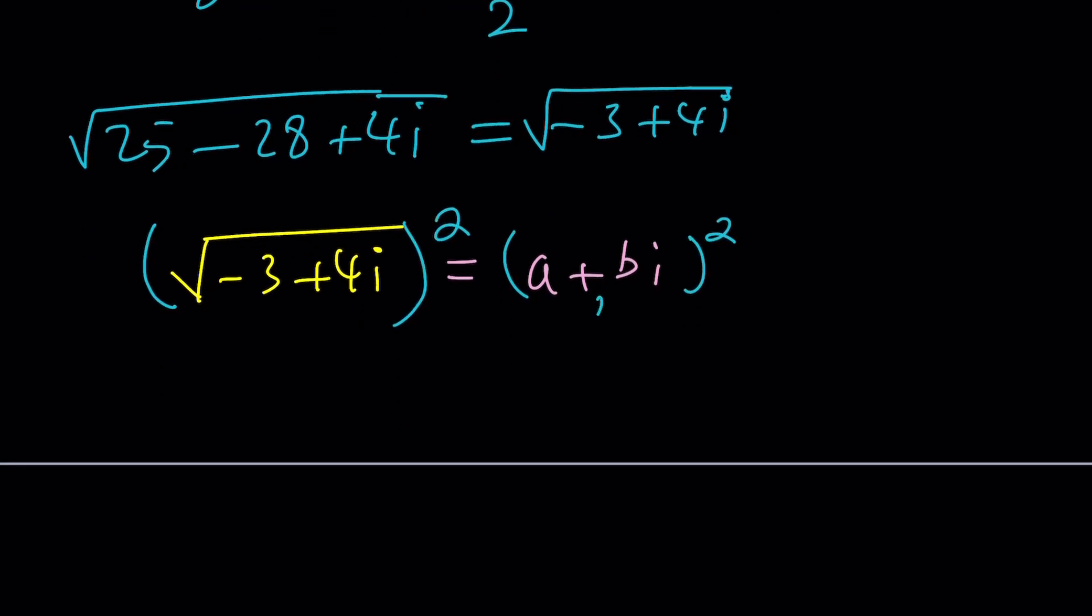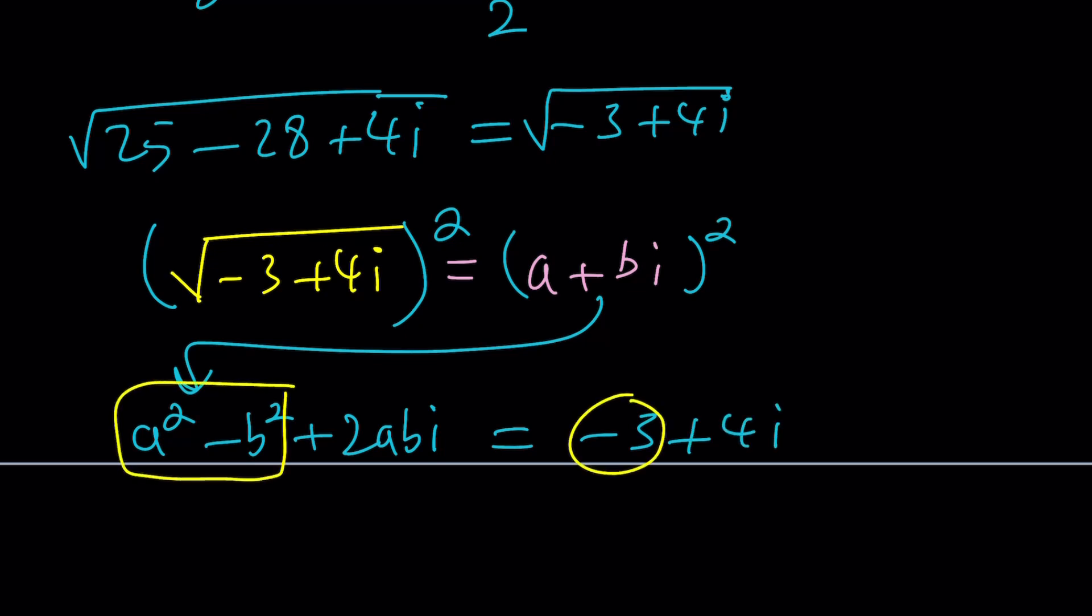So let's go ahead and do it and put this guy on the left. A squared minus B squared. Remember, I squared is negative 1 plus 2ABI equals negative 3 plus 4I. Now, we have the real part being equal to the real part.